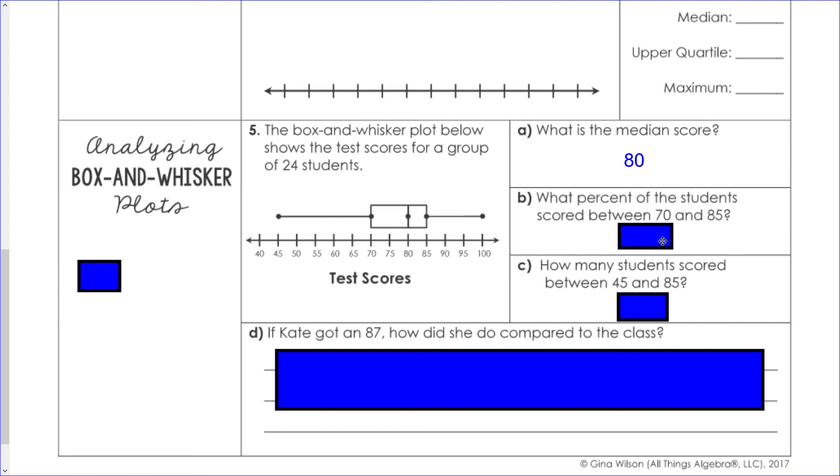What percent of the students scored between 70 and 85? Remember between each of the dots is 25 percent of the information. We have 25 percent here and 25 more percent here, so 50 percent of the students are between those two numbers, 70 and 85.